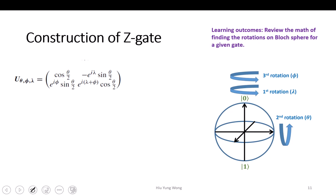But before that, let's review something. Last time we said that if I want to construct a unitary matrix — this is purely just math — we want to rotate for a unitary matrix. This corresponds to a matrix equation where on the Bloch sphere you first rotate about the Z-axis by lambda, then rotate about the Y-axis by theta,